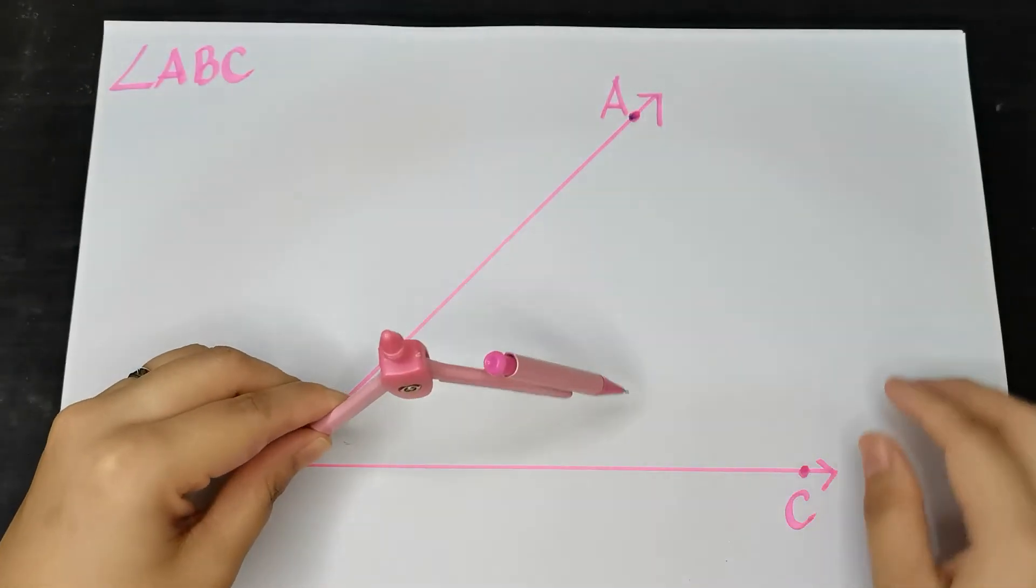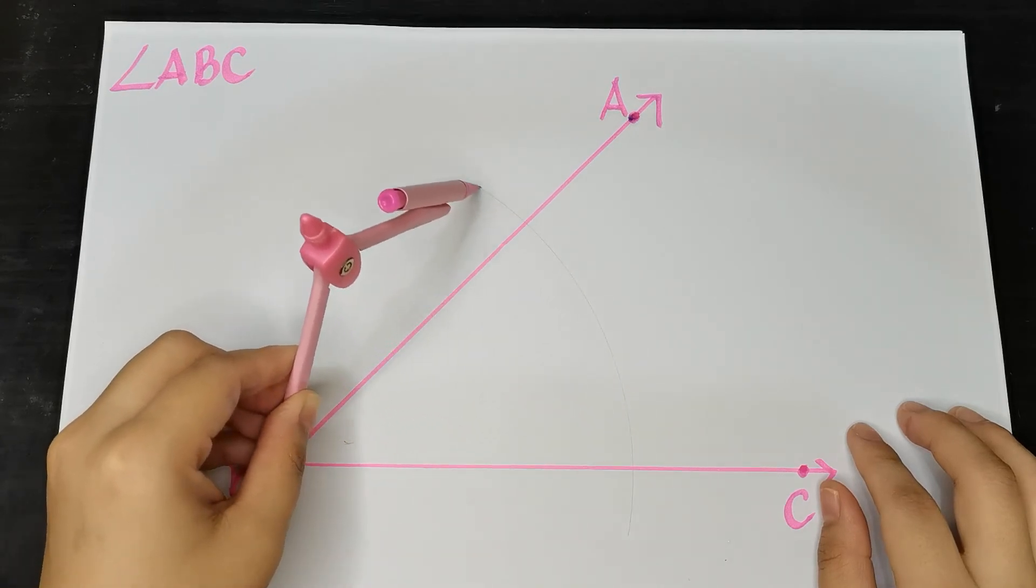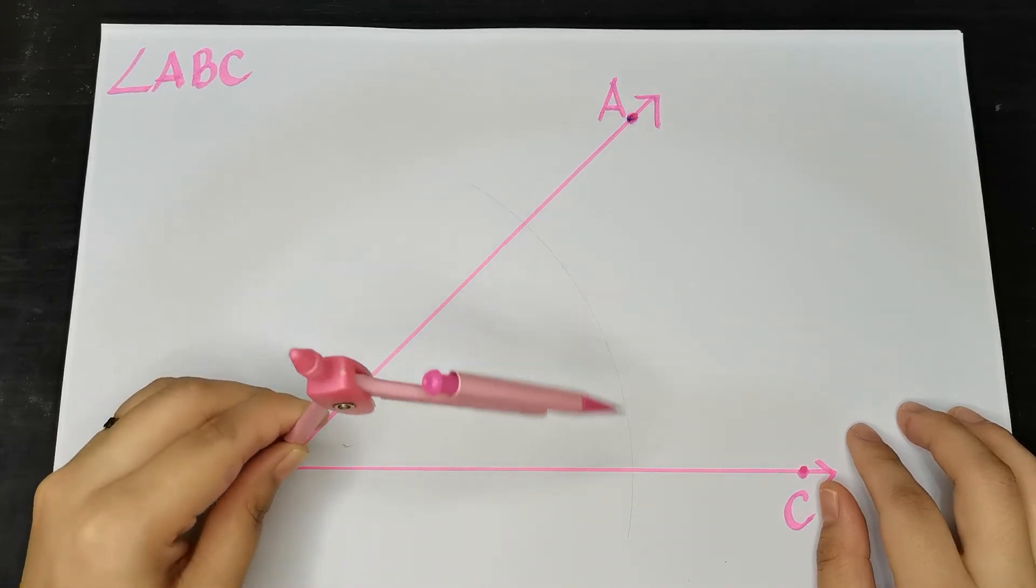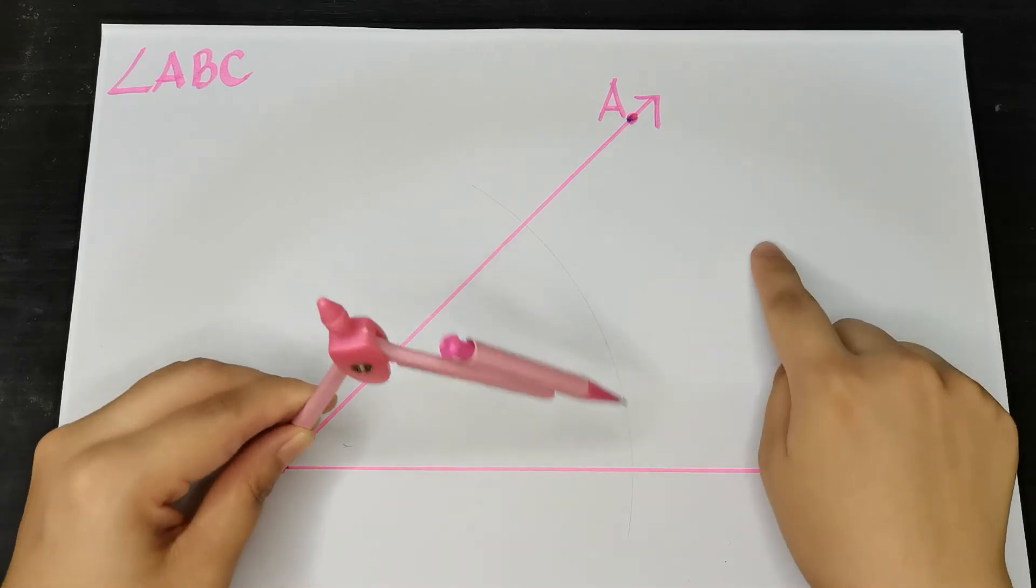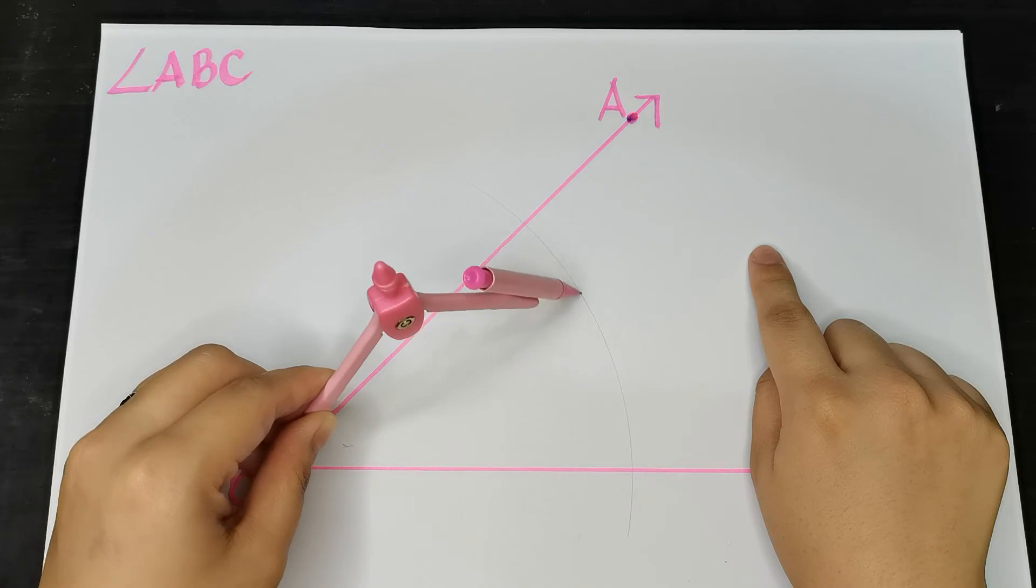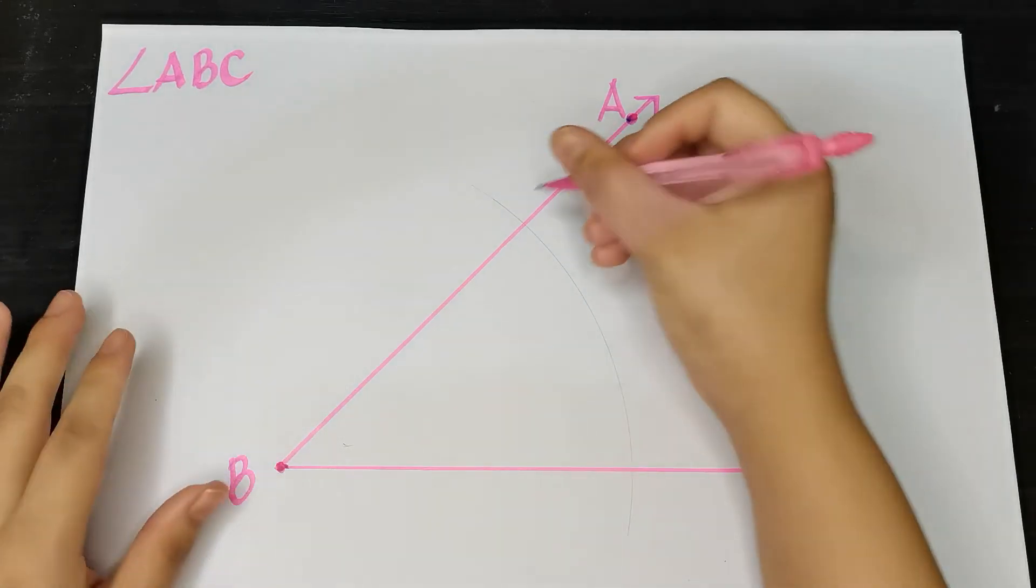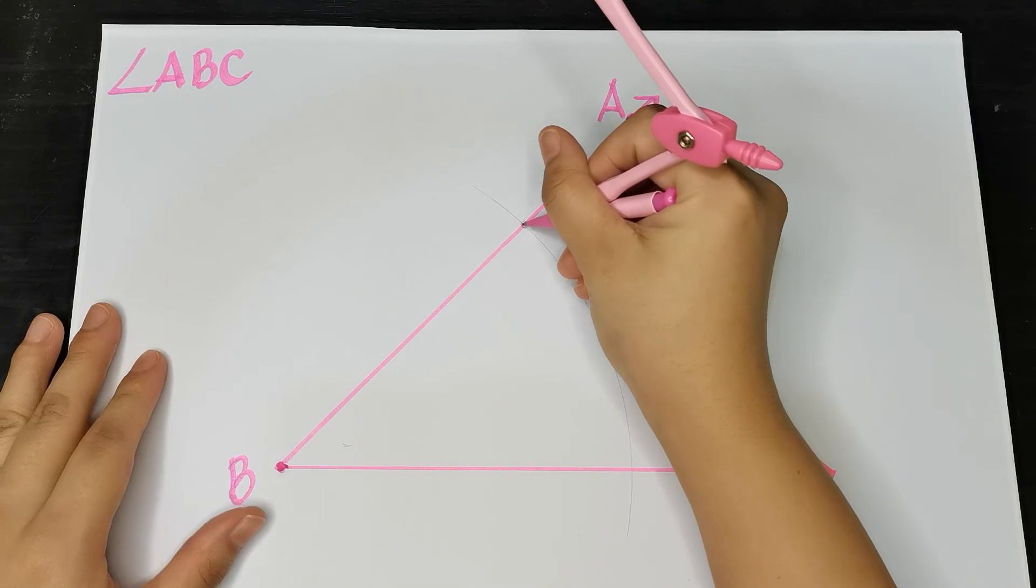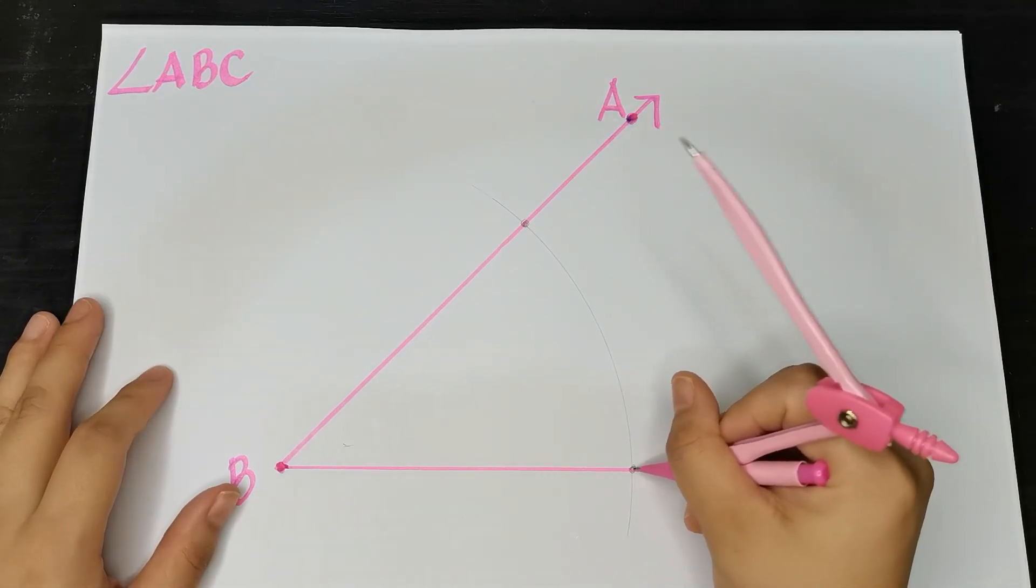I swung and created an arc. Did you see the figure? I now have a point of intersection here and another point of intersection here. That's what step three is about.